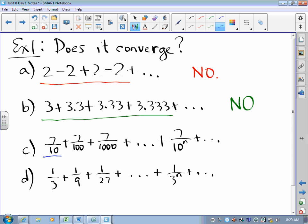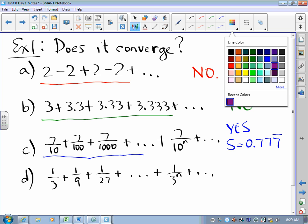0.7, 0.77, 0.777, and so on. This does converge. The sum is 0.777 repeating. Those terms get closer and closer to zero. We add them up, we get something that approaches 0.77777.